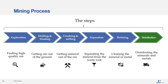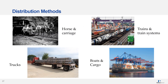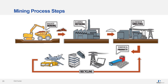The next step after refining is distribution — distributing the minerals and metals. Originally, distribution of metals and minerals started using horses and carriages; however, transport methods have evolved and now we commonly use trucks, trains, and boats. Mining is really the beginning of a product life cycle. After a mineral or metal is mined and distributed, products are manufactured from these materials and the product life cycle is created and managed so that precious materials can be recycled. PerkinElmer, with its extensive product offering, can assist during all stages of a product life cycle.